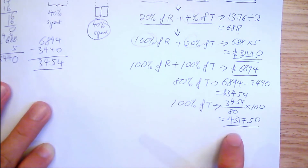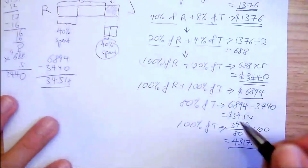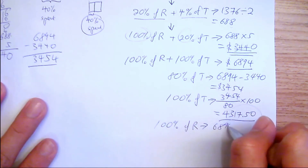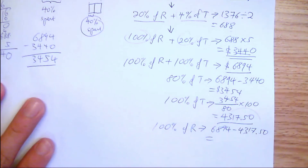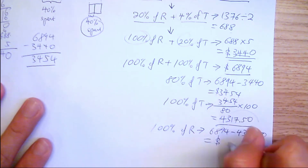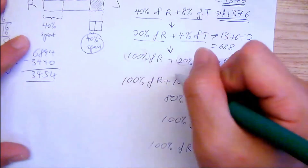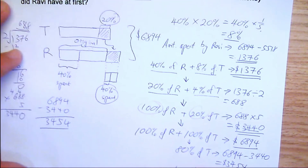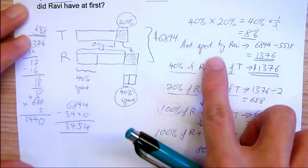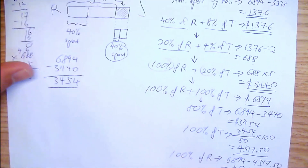So Tim has $4,317.50. The question asks how much money did Ravi have at first, so 100% of Ravi equals 6,894 minus 4,317.50, which gives us $2,576.50. This is how you do it — this method is called logic sequence, which is preceded by the model. The logic sequence is a very useful tool, and I hope this is helpful for you!